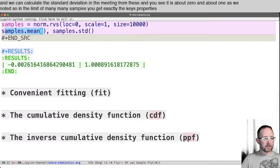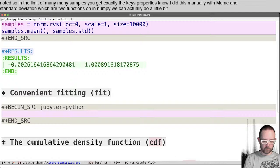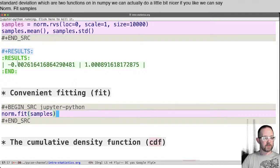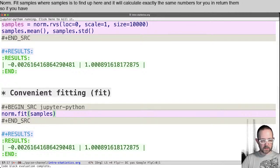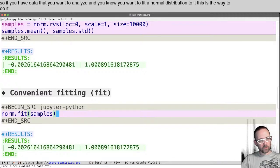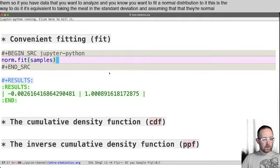So in the limit of many, many samples, you get exactly these properties. Now, I did this manually with mean and standard deviation, which are two functions in numpy. We can actually do it a little bit nicer, if you like. We can say norm.fit samples, where samples is defined up here. And it will calculate exactly those same numbers for you and return them. So if you have data that you want to analyze and you know you want to fit a normal distribution to it, this is the way to do it. It's equivalent to taking the mean and the standard deviation and assuming that they're normal.